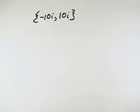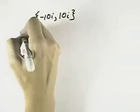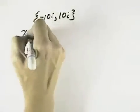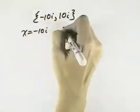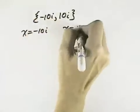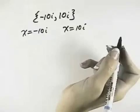We want to write a quadratic equation in standard form that has the given solution set. Our solutions are x equals negative 10i and x equals 10i. So if we go back to factors,